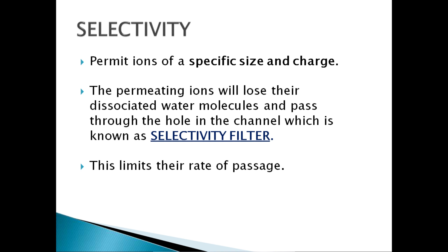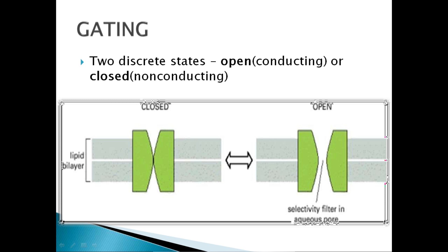Each ion channel permits ions of a specific size and charge. The permeating ions lose their dissociated water molecules and pass through the hole in the channel, which is known as the selectivity filter. This limits their rate of passage.